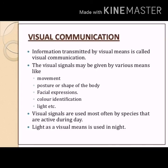Another important method is visual communication, which involves sending and understanding messages only through images or pictures. Information transmitted by visual means is called visual communication. Visual signals may be given by various means like movement, posture, shape of the body, facial expression, color identification, light, etc.